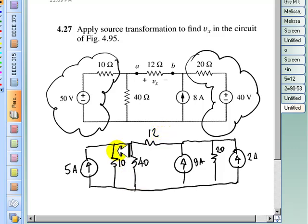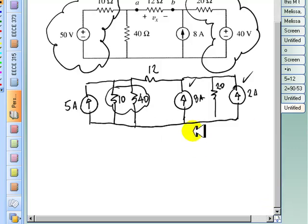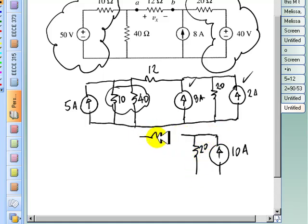Now, these two are in parallel, we can combine them. This source and this source, they are in parallel. Combined, 8 and 2, those two current sources are equivalent to a 10 amp current source. The resistor remains 20 ohms. 12 ohms here. 10 in parallel with 40, that would be 400 divided by 50, that is 8.